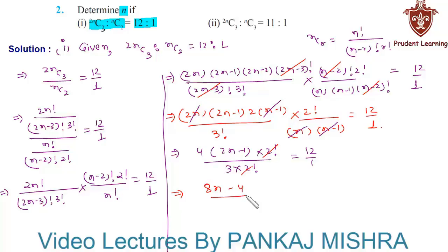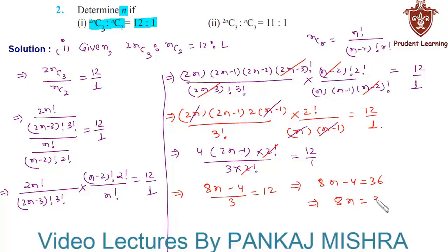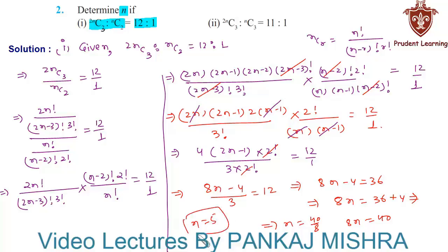So we have 4 into (2n minus 1) upon 3 is equal to 12. This gives us 8n minus 4 is equal to 36, so 8n is equal to 36 plus 4, that is 8n is equal to 40. This gives us n is equal to 40 over 8, that is n is equal to 5. Hence the value of n is equal to 5 for the first section.